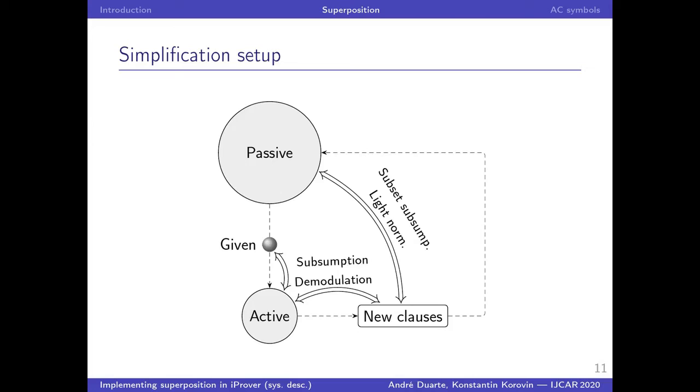Or we could make use of the pairs of simplifications that we mentioned before and use the cheap ones with passive, like subset subsumption and light normalization, but use the full, more expensive simplifications with the active.